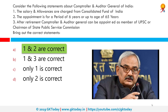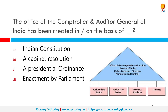The Comptroller and Auditor General of India is an authority established by Article 148 of the Constitution of India, which audits all receipts and expenditures of the Government of India and state governments, including those of bodies substantially financed by the government. The office was created on the basis of the Indian Constitution. The CAG is head of the Indian Audit and Accounts Department and helps parliament or state legislature hold their respective governments accountable.